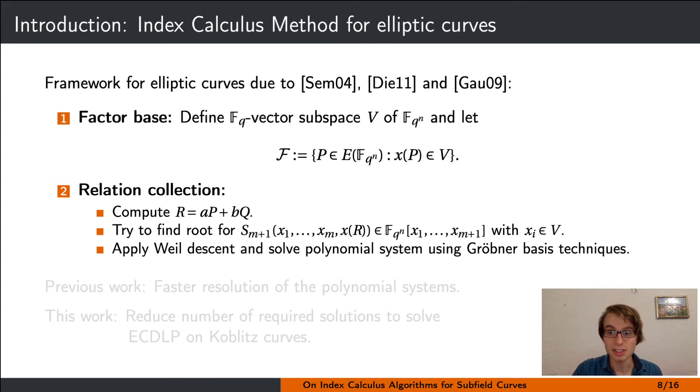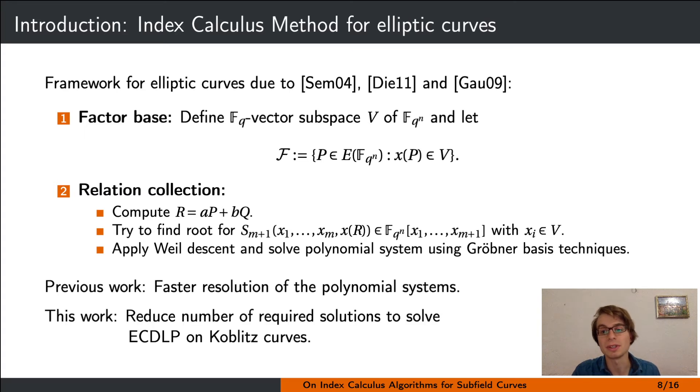Solving the polynomial system gets expensive very quickly, which is why a lot of previous work has been dedicated to solving the arising polynomial systems faster. Meanwhile, our work's speedup is achieved by reducing the number of polynomial systems that need to be solved in the first place on Koblitz curves. But we'll come back to that shortly.